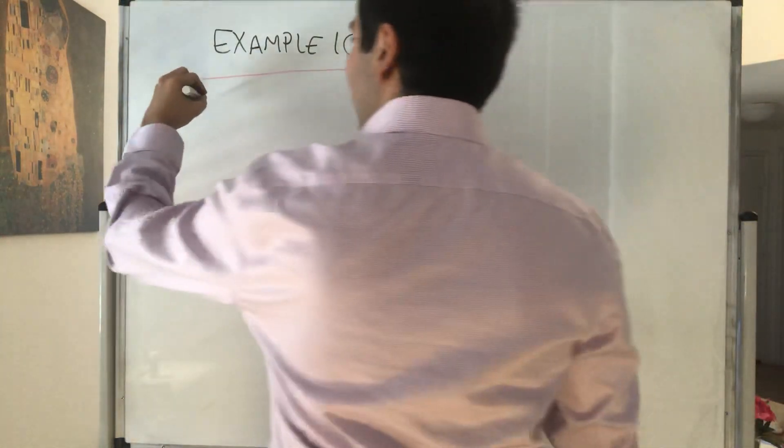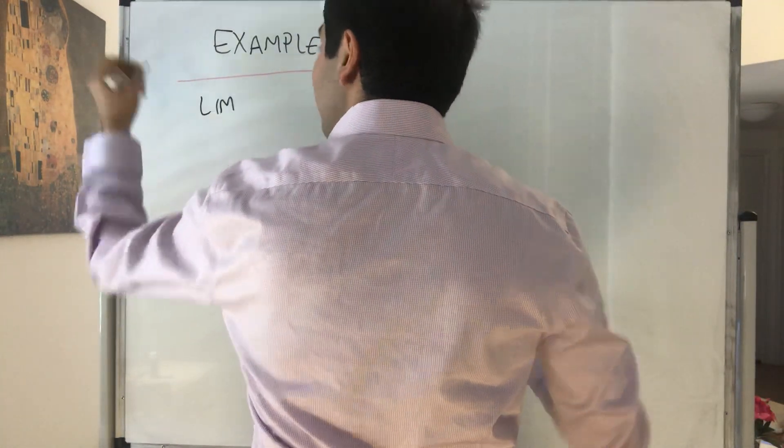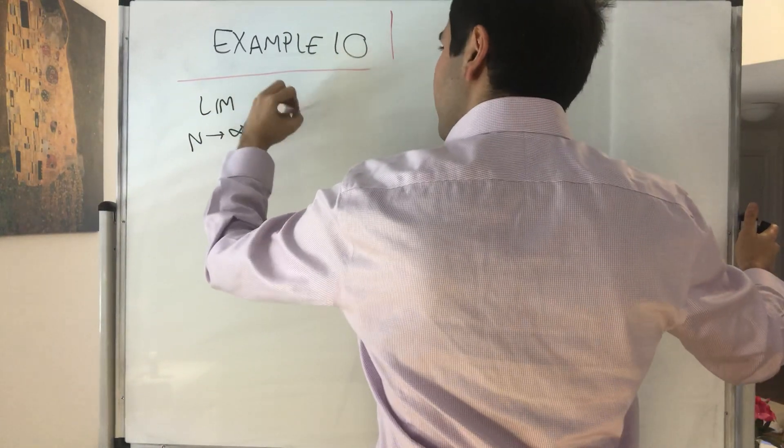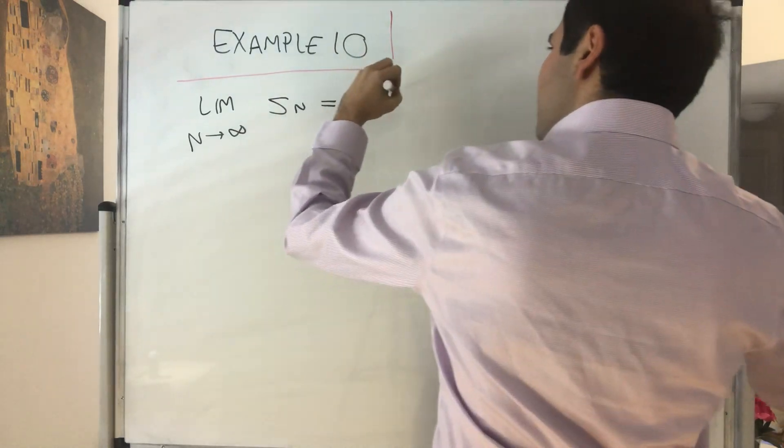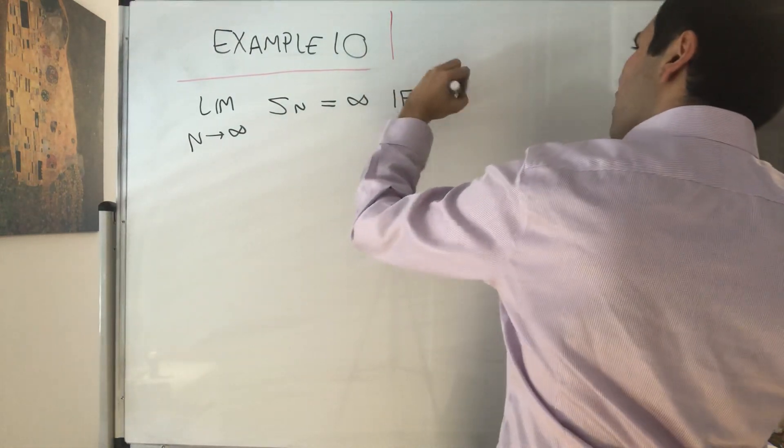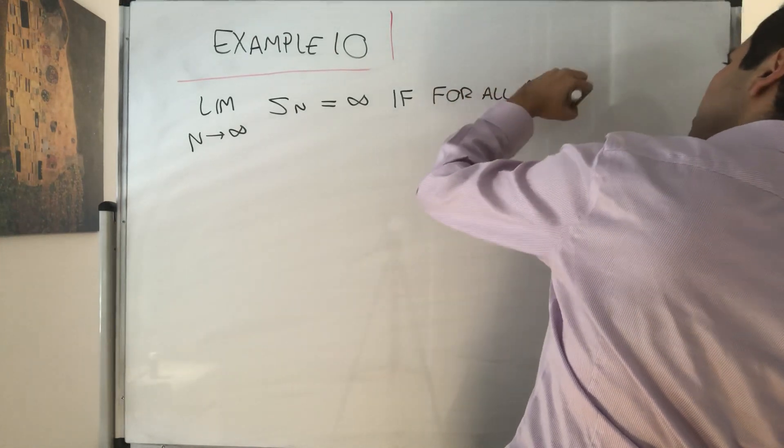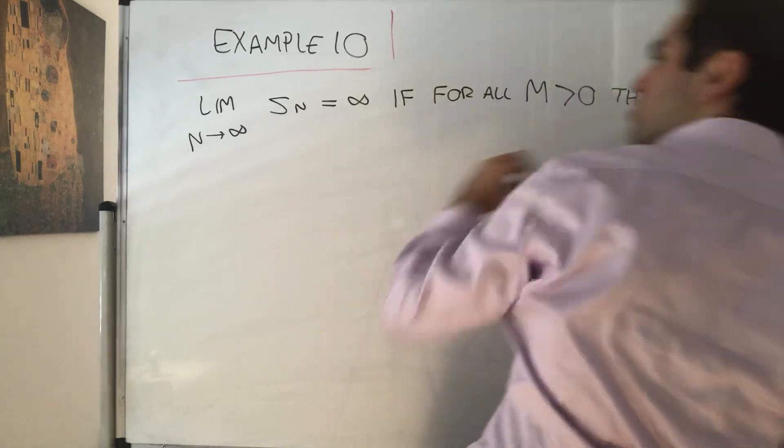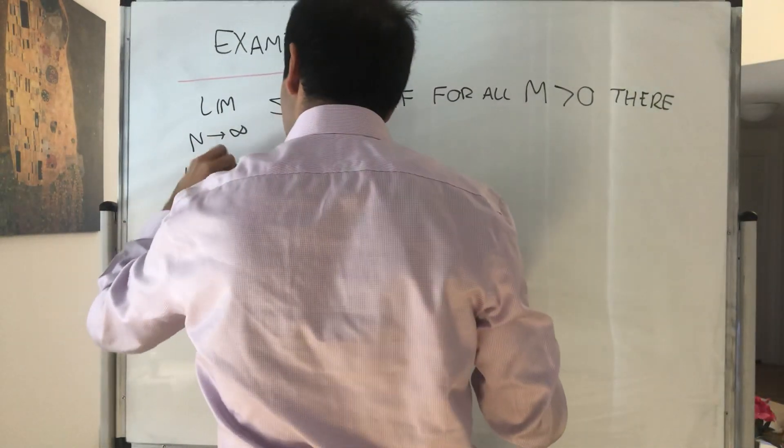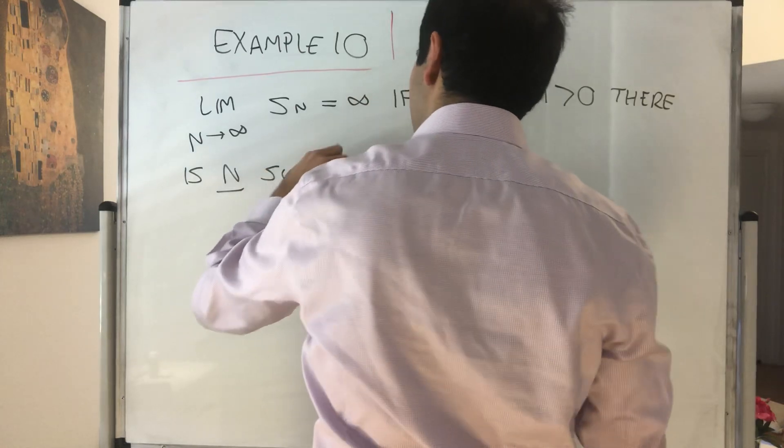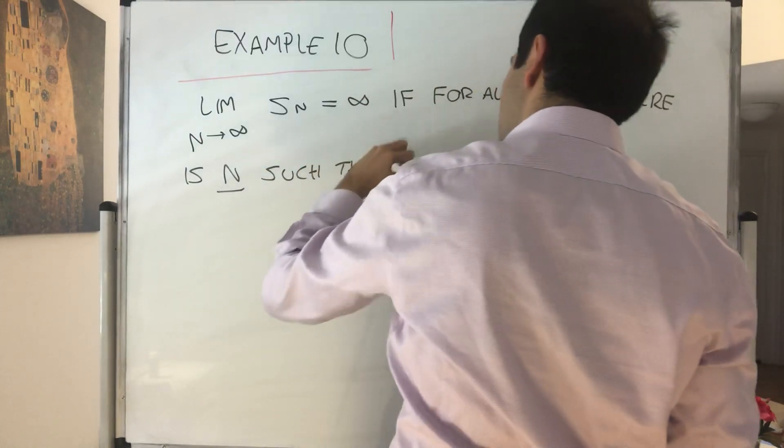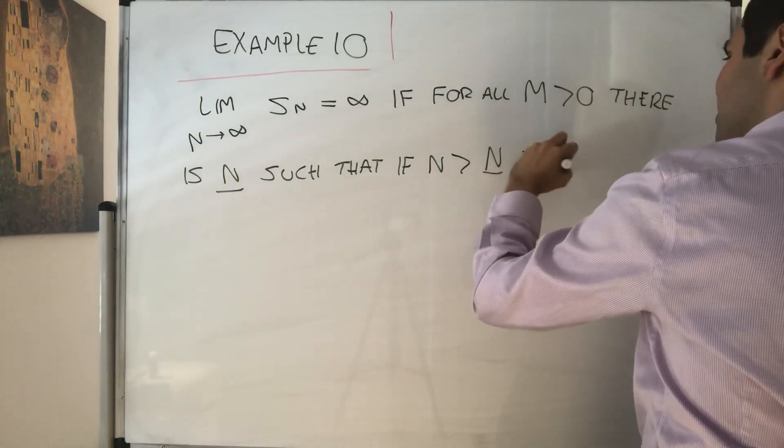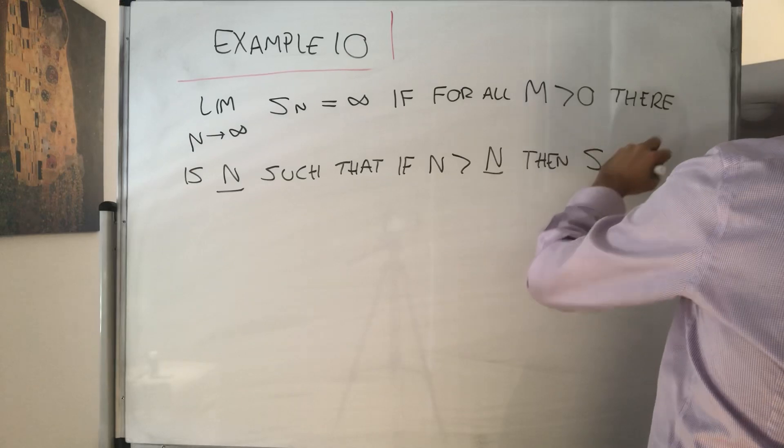And essentially all that this means is that your sequence is as large as you want it to be. So limit n goes to infinity of Sn equals infinity if for all m positive you can find some threshold such that after that threshold, n is bigger than capital N, then your sequence is above that threshold.